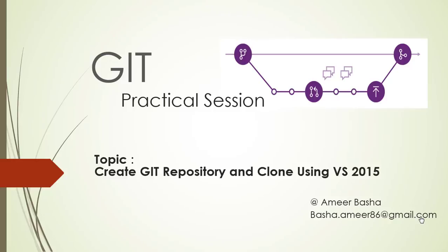Good morning everyone, this is Amir. In this session we are going to discuss about git repositories and how to clone using Visual Studio. To get a copy of the source code, you first have to clone your team service git repository. Cloning creates both the copy of the source code for you to work with and all the version control information so that git can manage the source code.